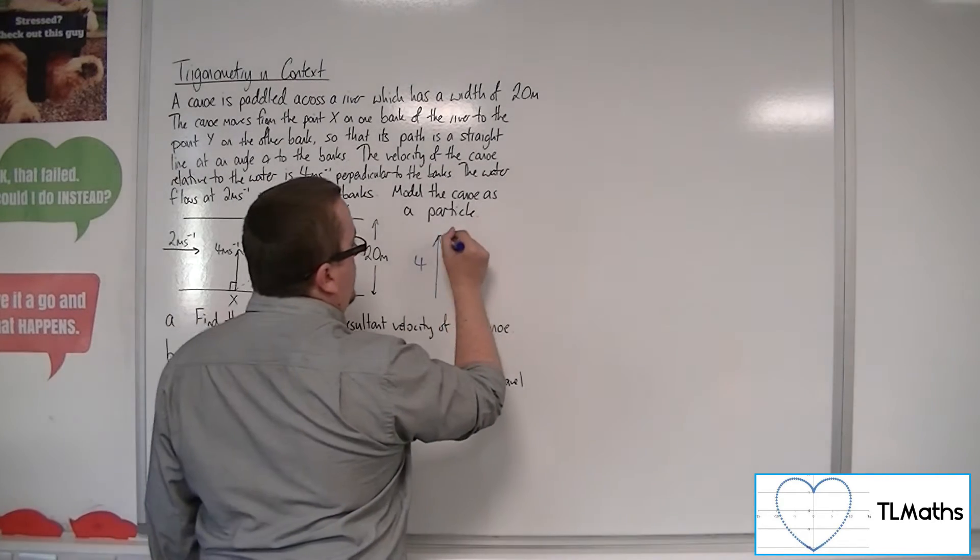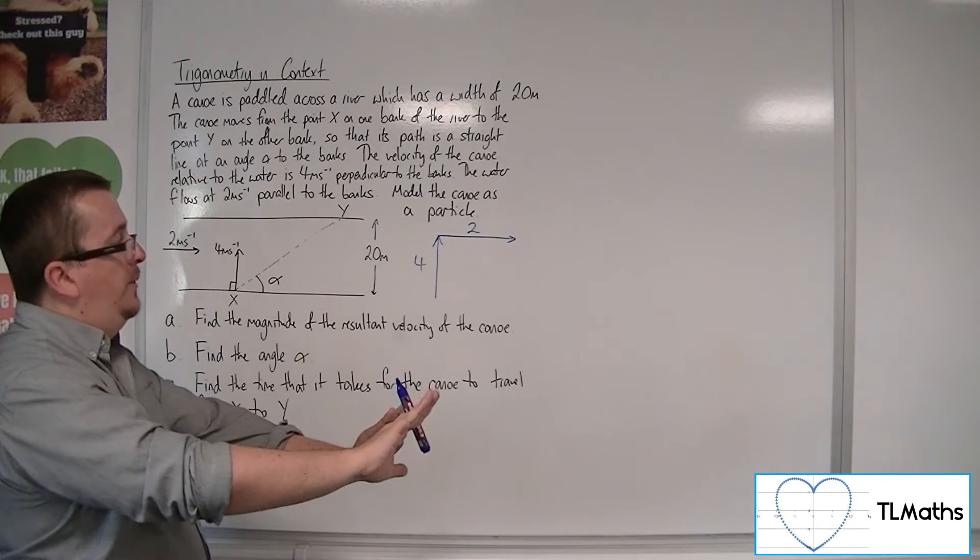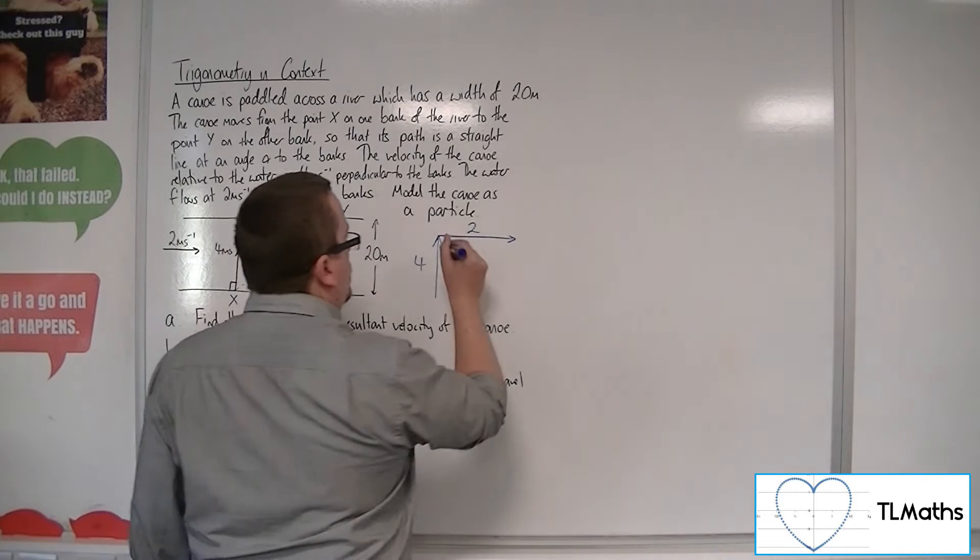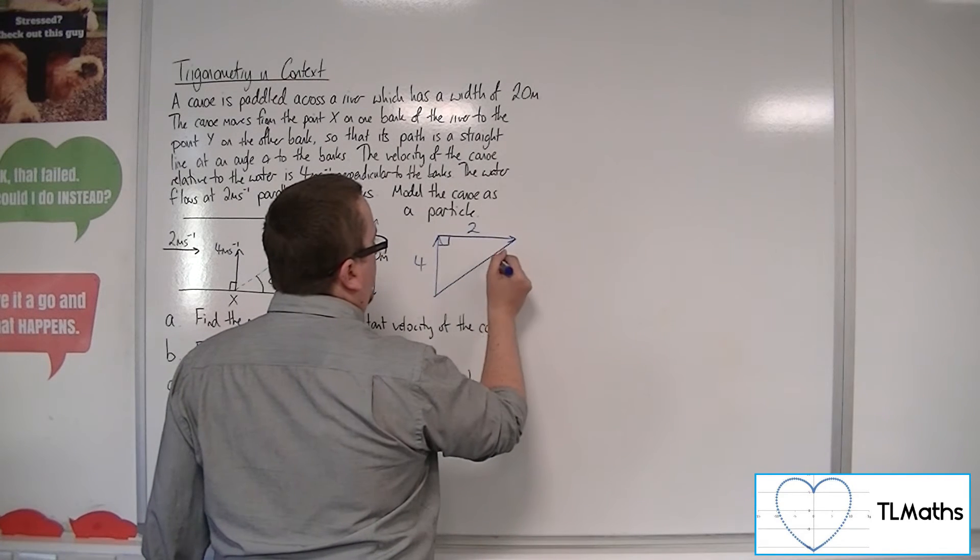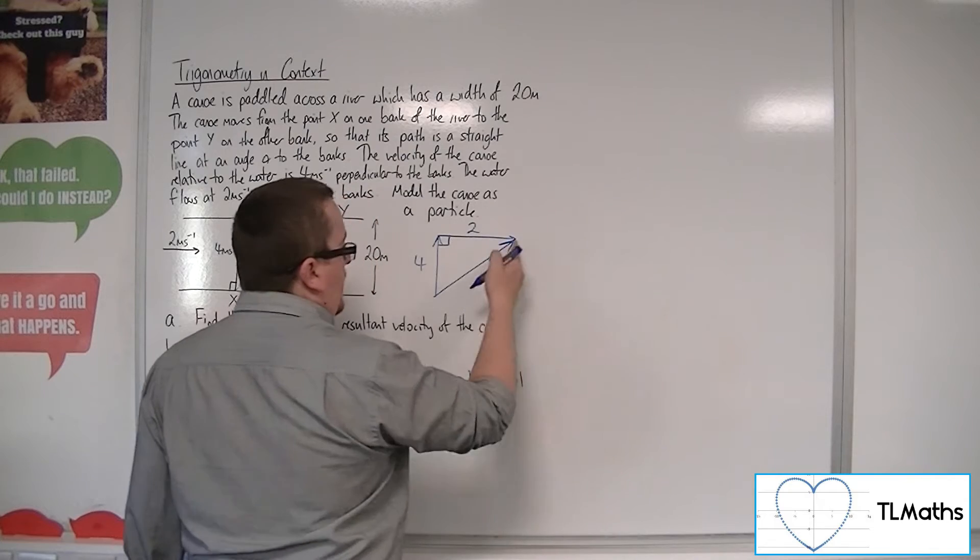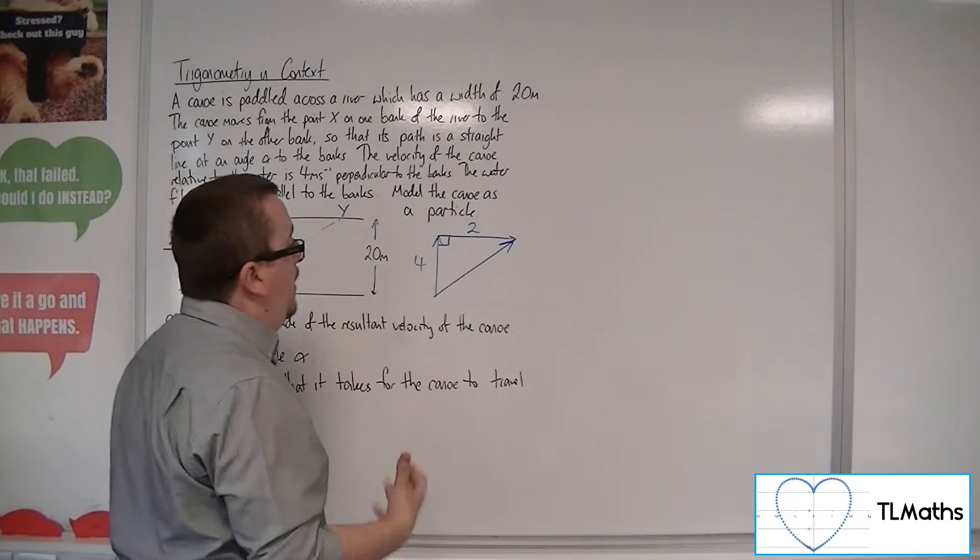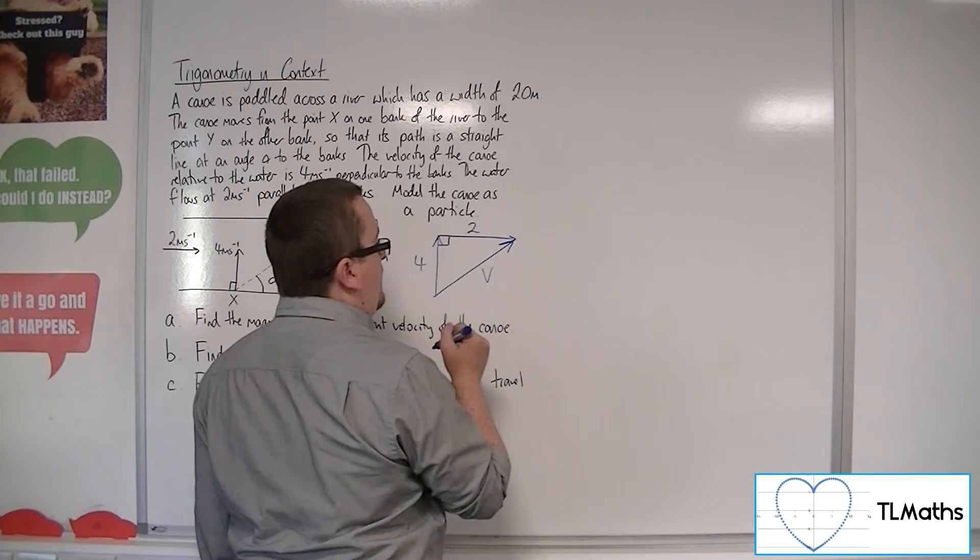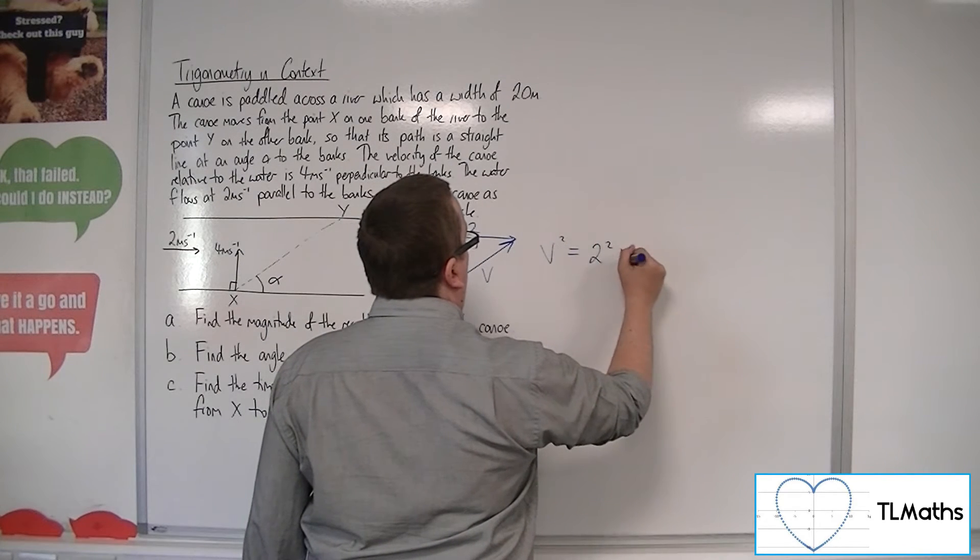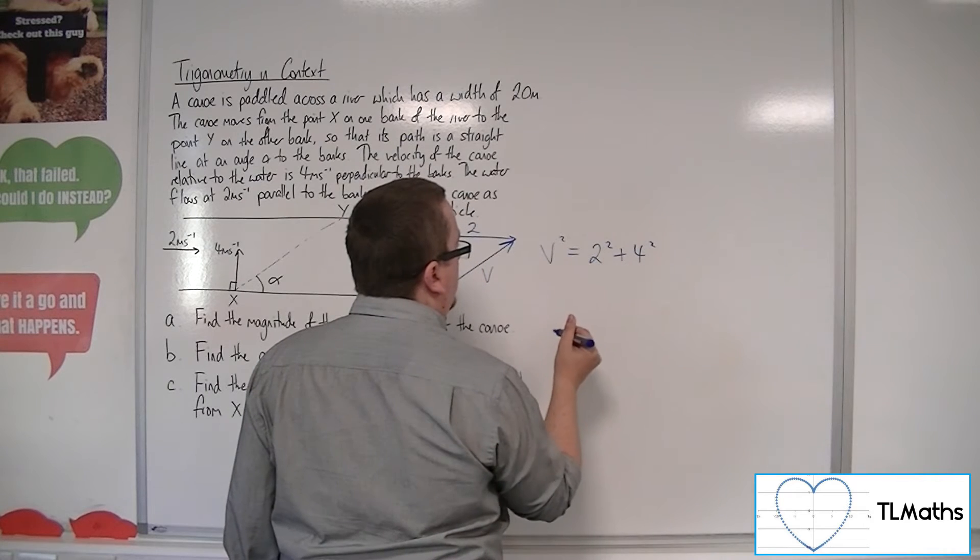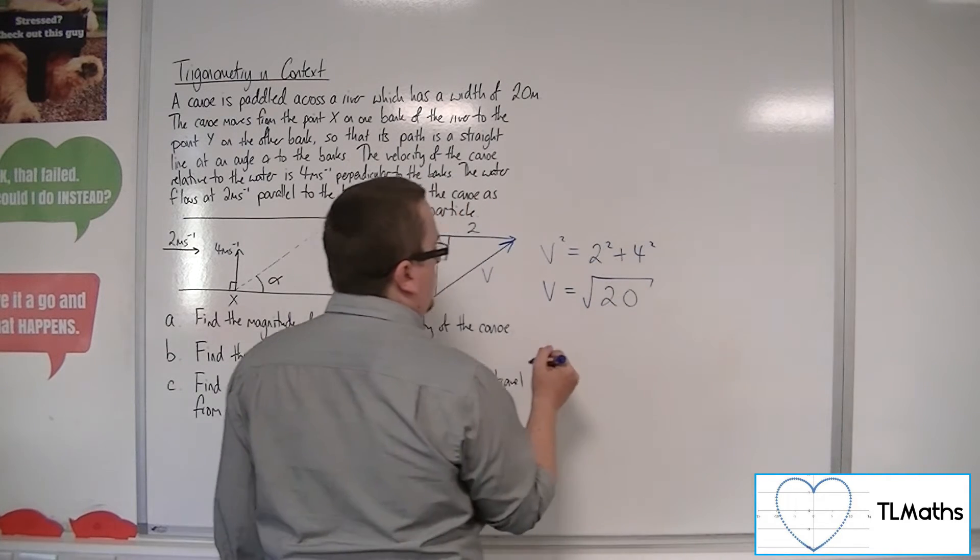And you are also traveling 2 meters per second, the water's pushing you 2 meters per second in that direction, which creates this right-angled triangle, and the resultant velocity is this here, this side. So we can use basic Pythagoras to get there. So we can say if that's v, then v squared is equal to 2 squared plus 4 squared. So v is the square root of 20.